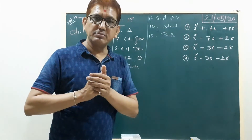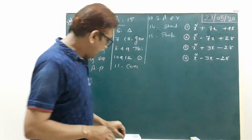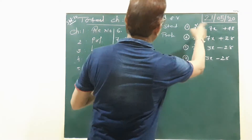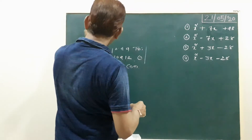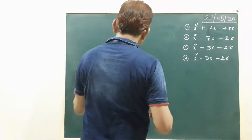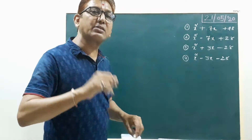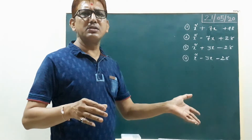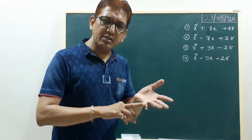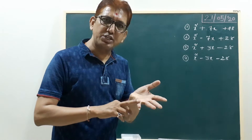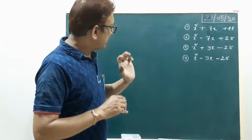Now, before starting the board chapters, we will repeat factorization. We repeat the factorization method with examples, then start Chapter 2 Polynomials, Chapter 3 Linear Equations in Two Variables, and Chapter 4 Quadratic Equations.